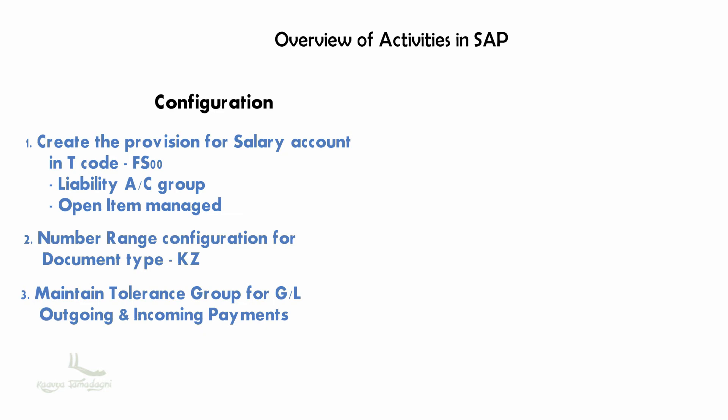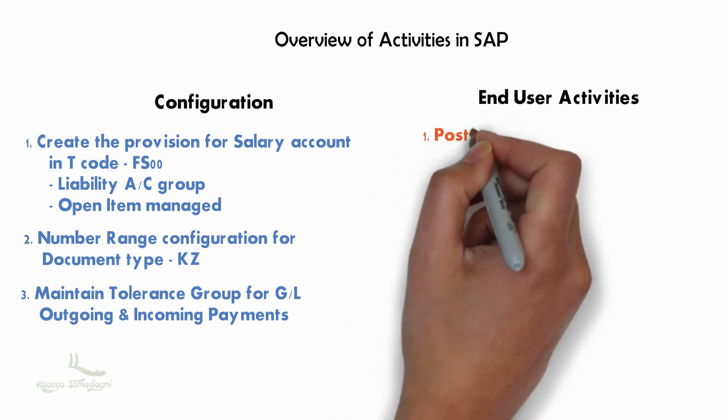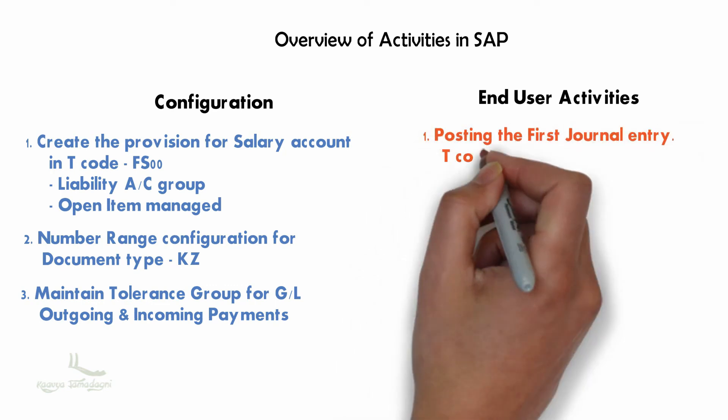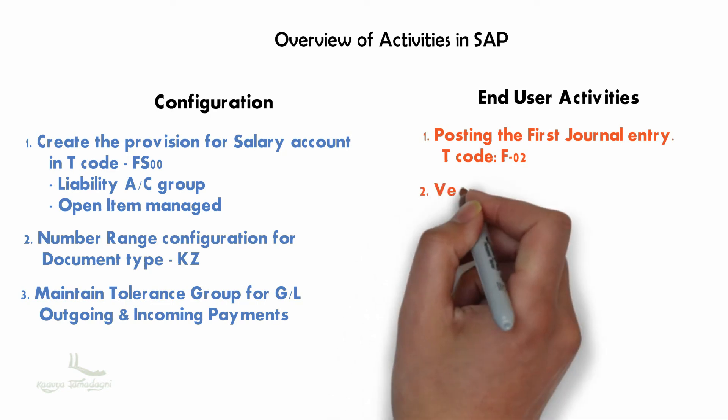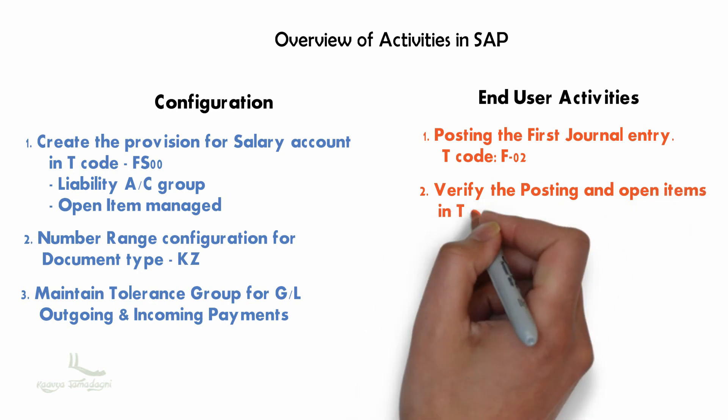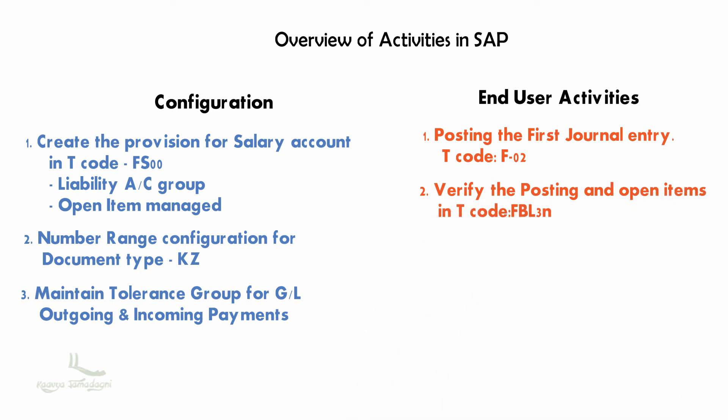We create the posting for the first journal entry using T-code F-02 — that is, salary account debit to provisions for salary account. After creating the posting, we will verify it in the FBL3N report and check the status to confirm whether the provisions of the salary account is open or not.